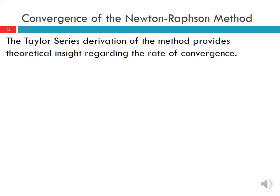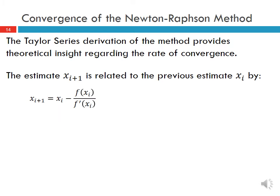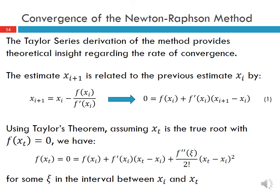It's important to discuss convergence of the Newton-Raphson method. The Taylor series derivation had the order h squared term representing the remainder, which provides theoretical insight into the rate of convergence. We know that the estimate xi plus 1 is related to xi by our formula, which we can rearrange to: f of xi plus f prime of xi times (xi plus 1 minus xi) equals 0. Call this equation 1.